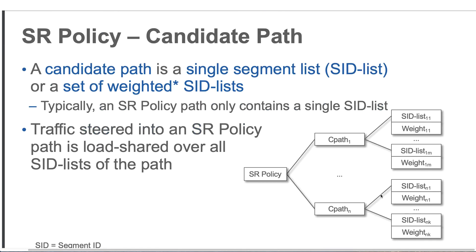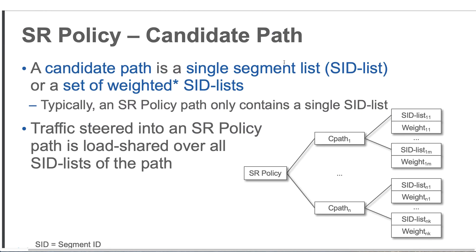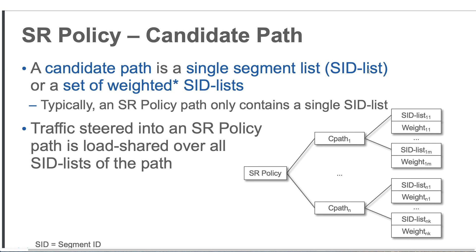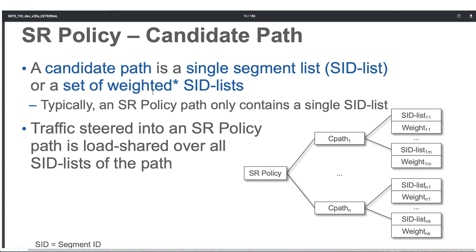Within a candidate path, we have a single segment list — also called a SID list — or a set of weighted SID lists. Typically an SR policy path contains only a single SID list. Traffic steered into an SR policy path is load-shared over all SID lists of the path. We can assign a weight to each SID list, and we can have multiple SID lists within a candidate path.